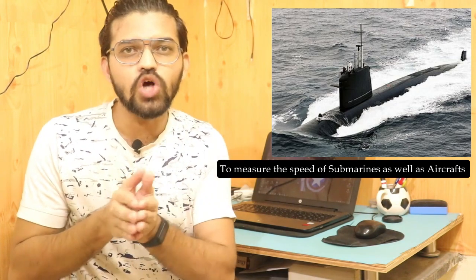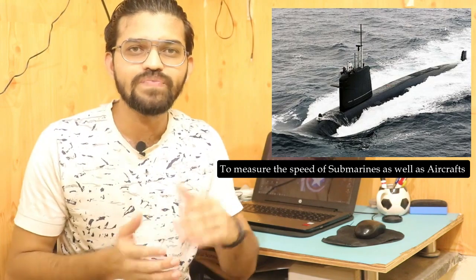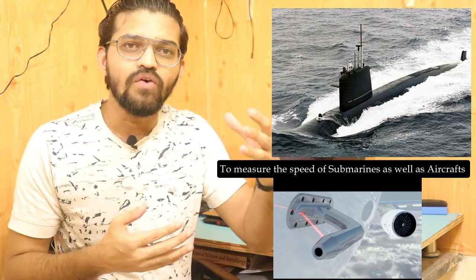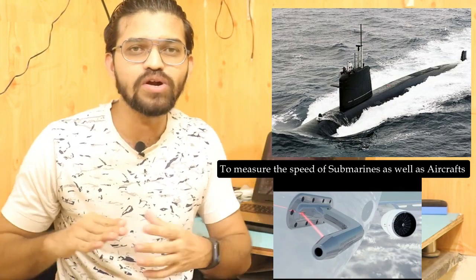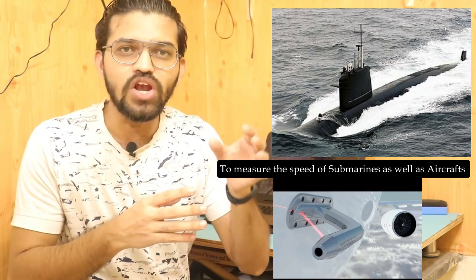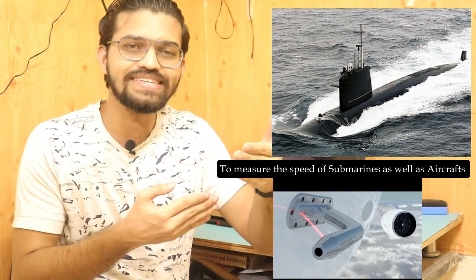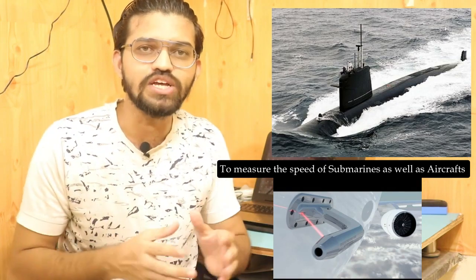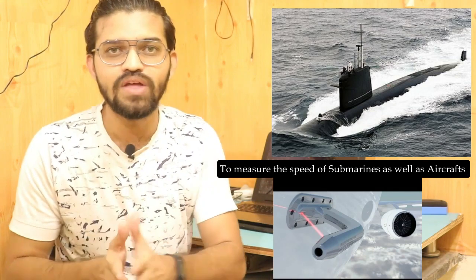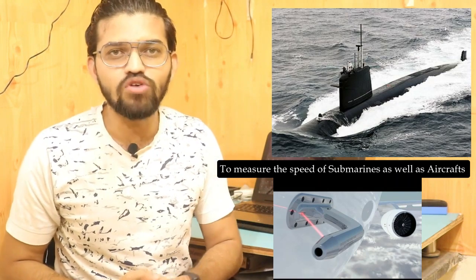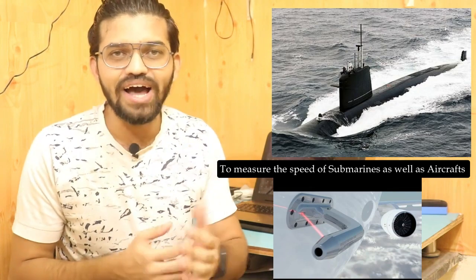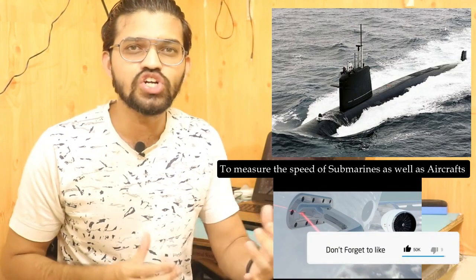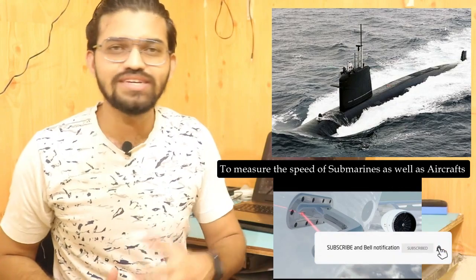The pitot tube is used to measure the speed of submarines — the upstream flow velocity of the liquid equals the submarine's speed. Similarly, for aircraft, measuring the drag velocity of incoming air gives the aircraft's speed. In this video we covered the pitot tube's construction, working, and formula. If you have doubts, comment below, and please subscribe to Engineers Academy.